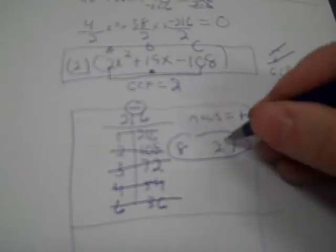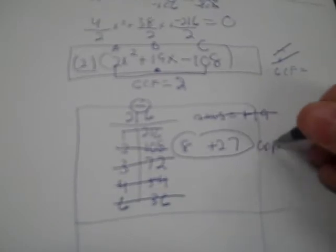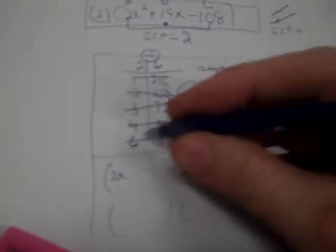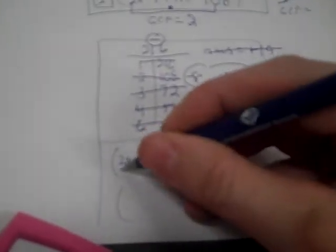So those are the two I go with. 27 gets a plus sign, and the negative means the signs are opposite. My A equals 2x², so when I make my parentheses I start with 2x and 2x, then minus 8 and plus 27. The GCF out of 2 and 8 is 2, so dividing gives 1x − 4.